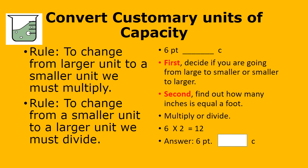Next: 6 pints equals blank cups. Pause the video and see if you can work this out. We are going from a larger unit to a smaller unit, so we multiply. How many cups equal a pint? 2. So we multiply 6 times 2 equals 12. That is our answer.